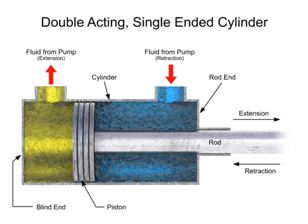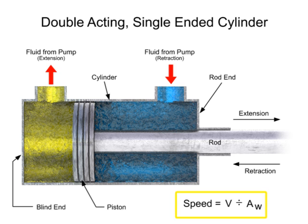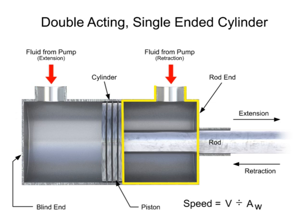The speed at which the piston extends and retracts is calculated using the volumetric flow rate divided by the area for the incoming fluid. Since each side of the cylinder has a different working area, each side experiences a different speed.